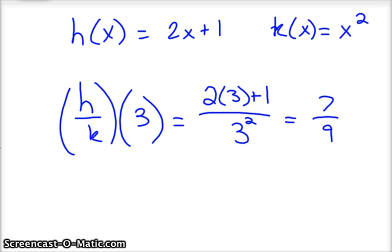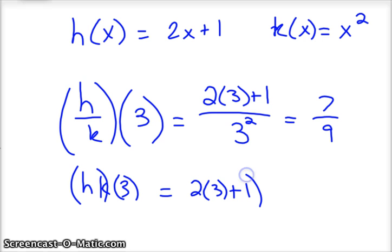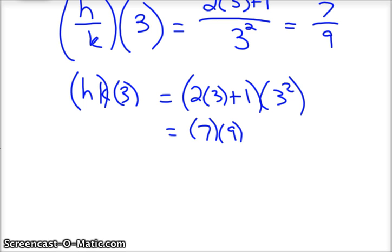Let's say we wanted h times k at 3. So h times k at 3 would be 2 times 3 plus 1 times 3 squared. And when you do that, do order of operations. Don't distribute that, it's going to make things ugly if you do that. So you'd have 7 times 9 or 63.